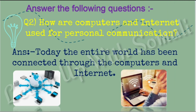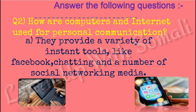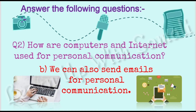Question number two: How are computers and internet used for personal communication? The answer is: today the entire world has been connected through computers and internet. Point A: they provide a variety of instant tools like Facebook chatting and a number of social networking media. Point B: we can also send emails for personal communication. Kids, you have to write both points A and B for this question.